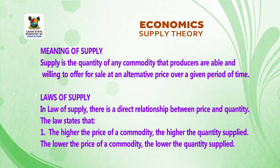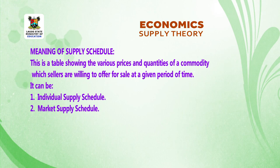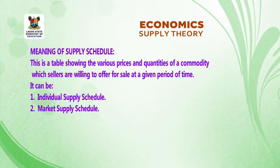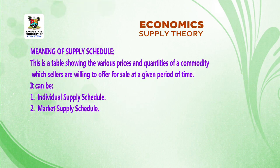Two: the lower the price of a commodity, the lower the quantity supplied. Meaning of supply schedule: This is a table showing the various prices and quantities of a commodity which sellers are willing to offer for sale at a given period of time.